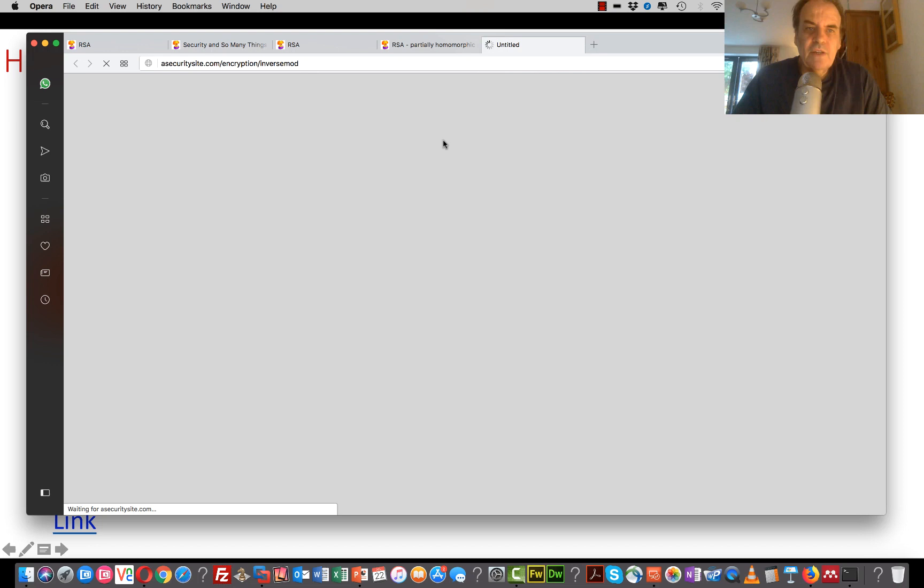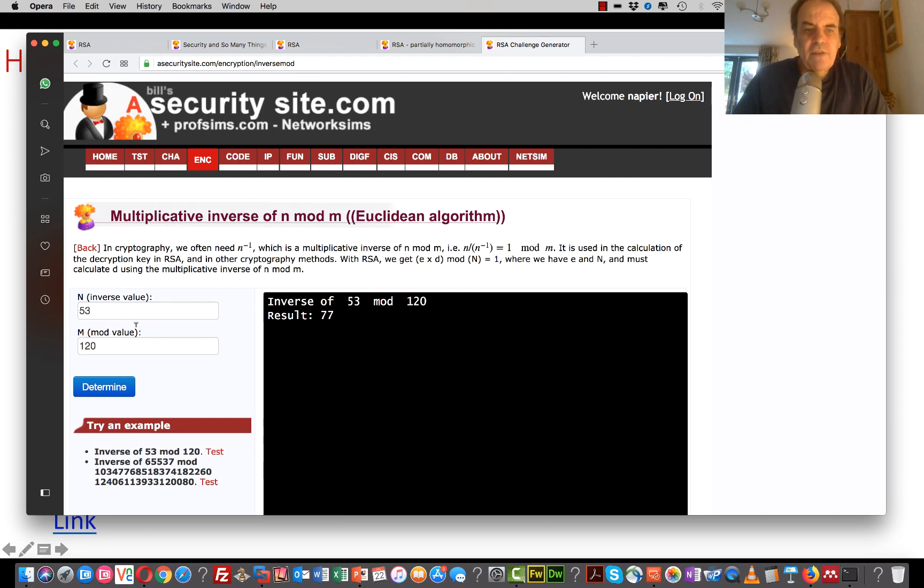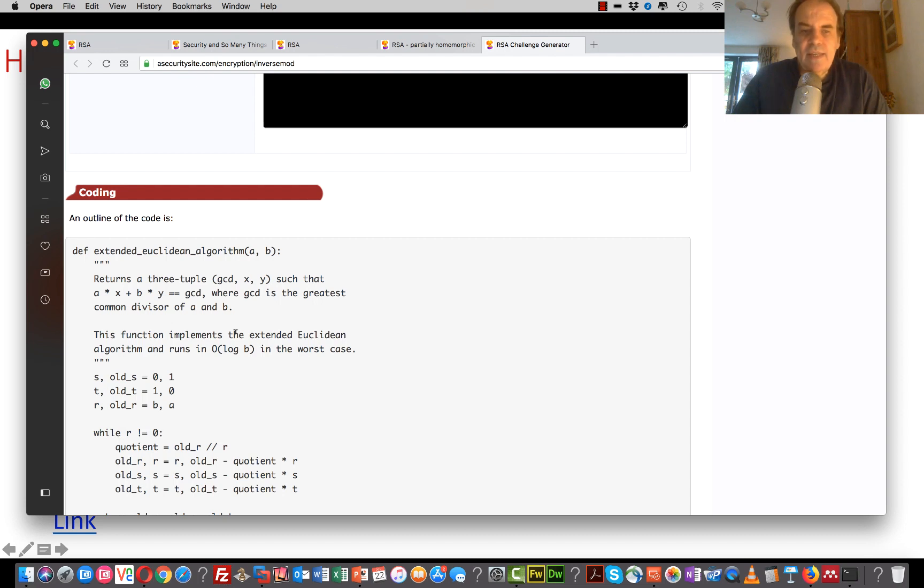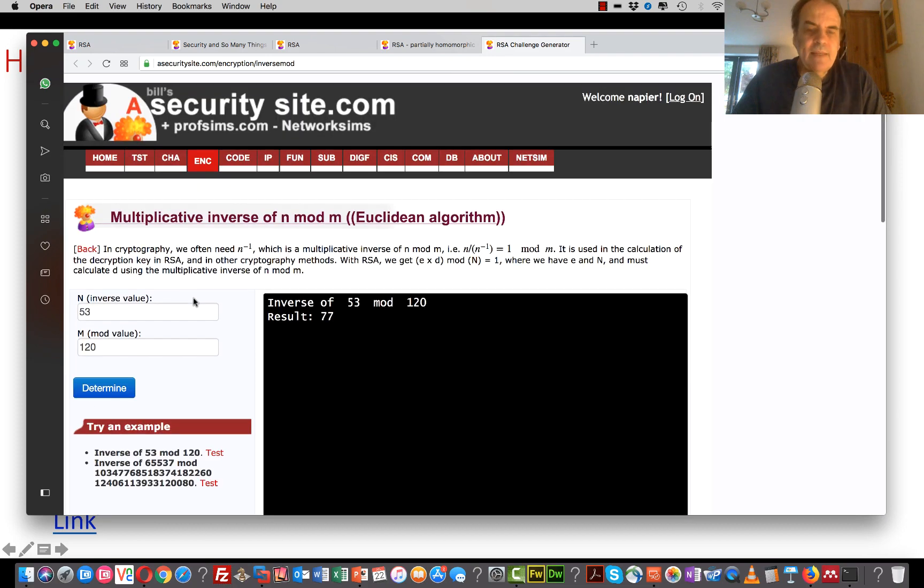So the inverse mod is this function here. Okay, the inverse of 53 mod 120 is 77. And what we do is we use the extended Euclidean algorithm to be able to work out the inverse. So it's the inverse of N mod P. And this is how we would do it in Python.